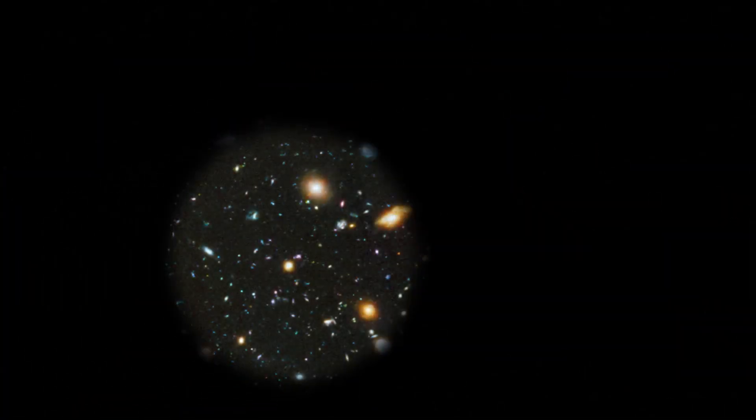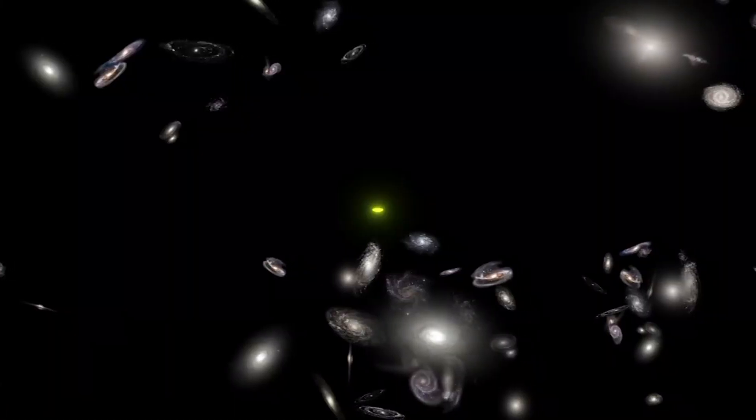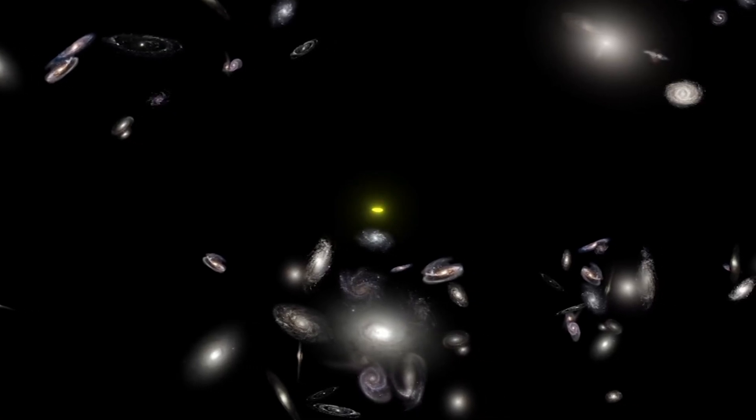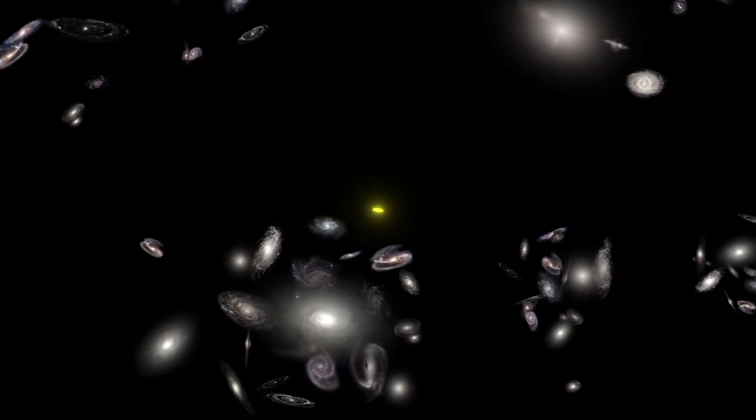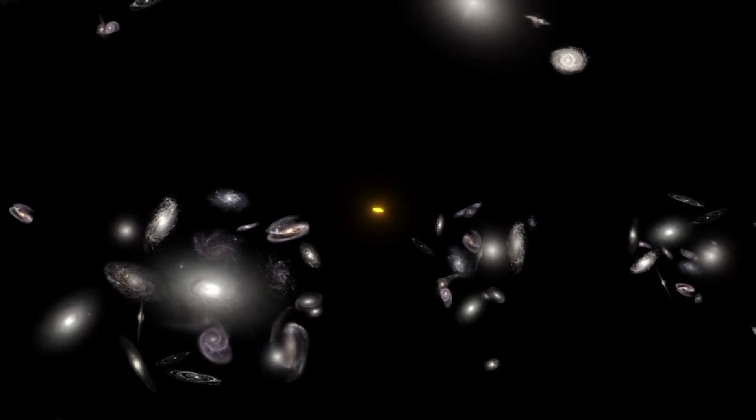The striking images captured by the James Webb telescope have challenged our understanding of the origins of the universe. Specifically, these images directly contradict the Big Bang hypothesis, which has long been considered an unquestioned truth by most cosmology theorists. The galaxies captured in these images appear to be too small, smooth, old, and numerous compared to the predictions of the Big Bang hypothesis.